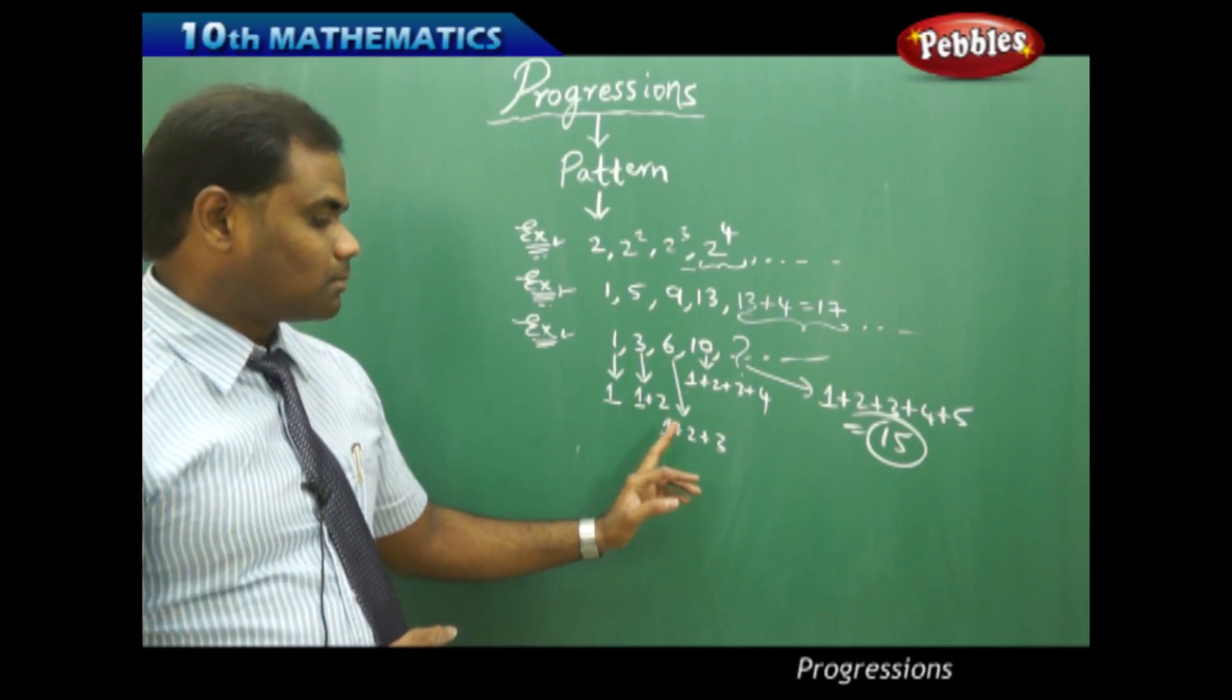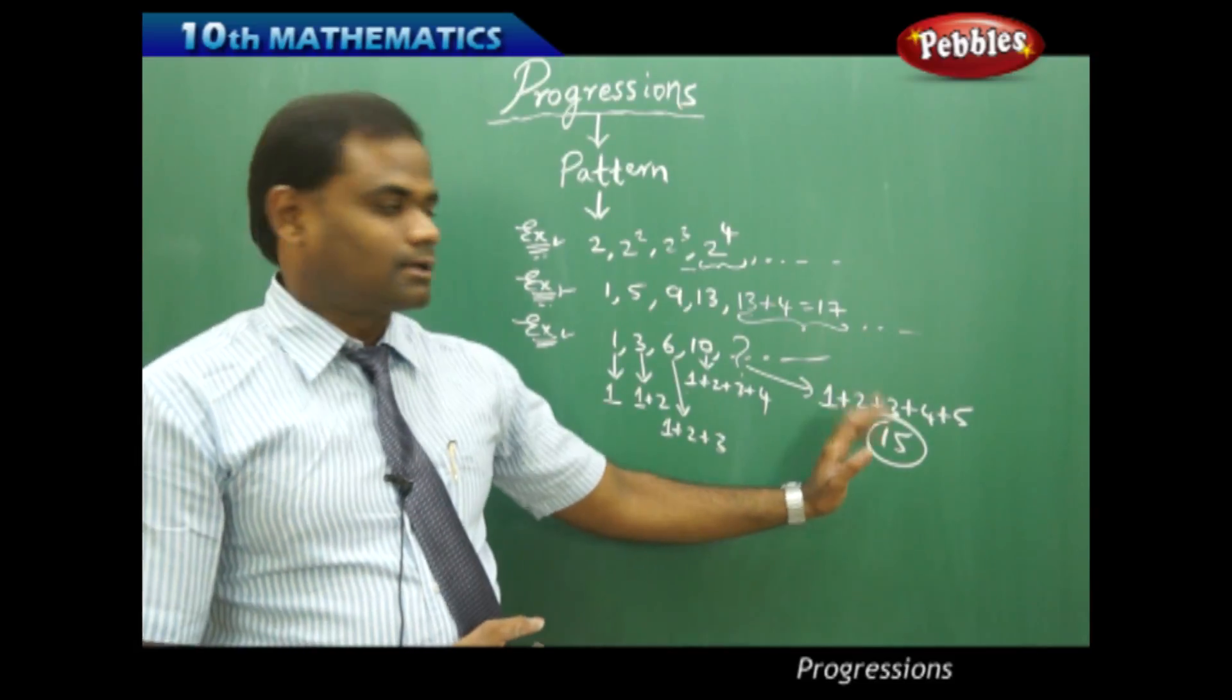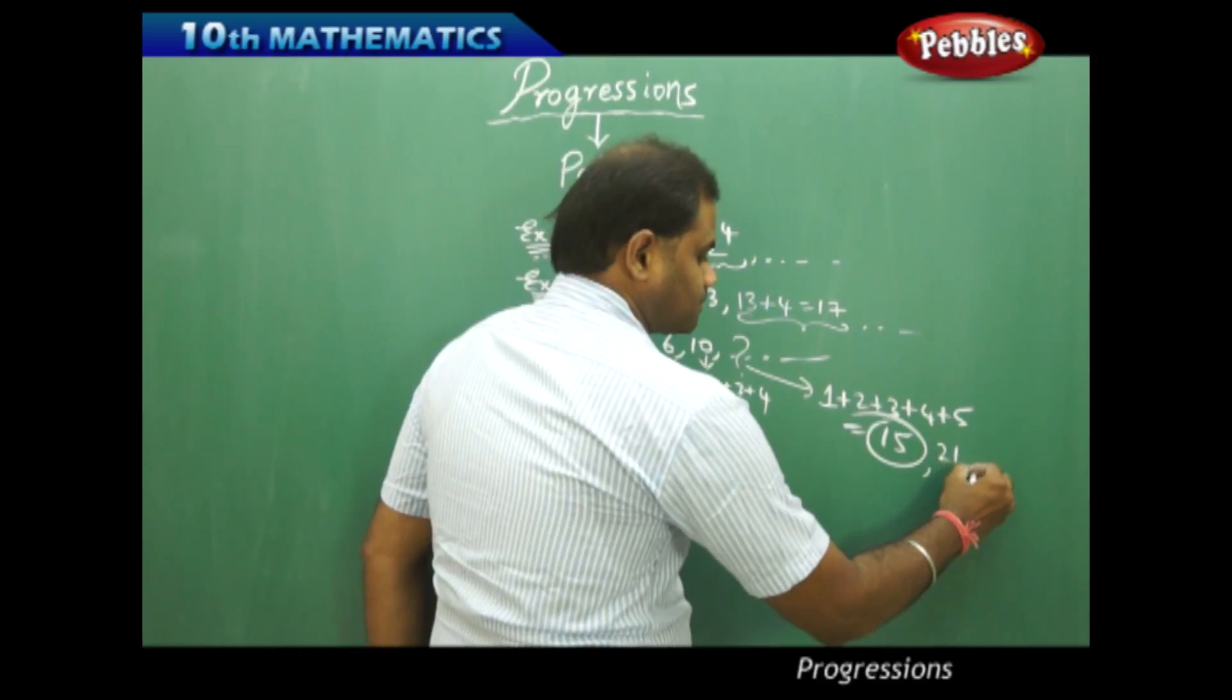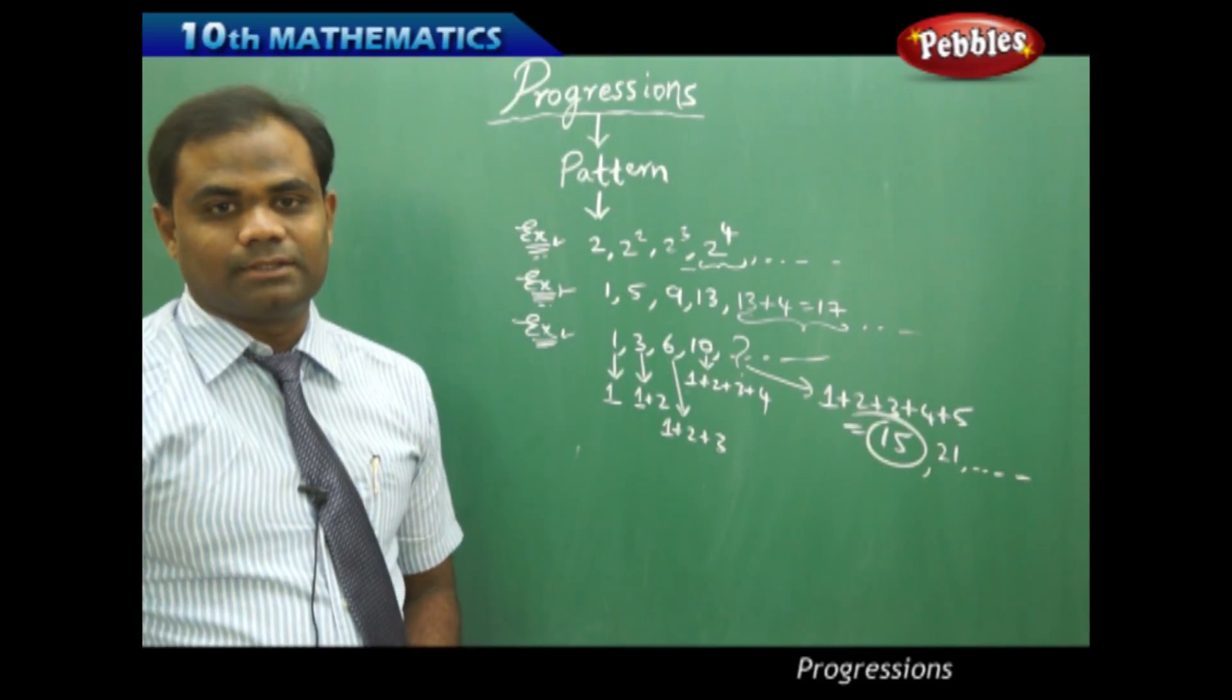In this case being 1, 1 plus 2, 1 plus 2 plus 3, etc. 15 and then comes 21, etc. This is how we identify the pattern here.